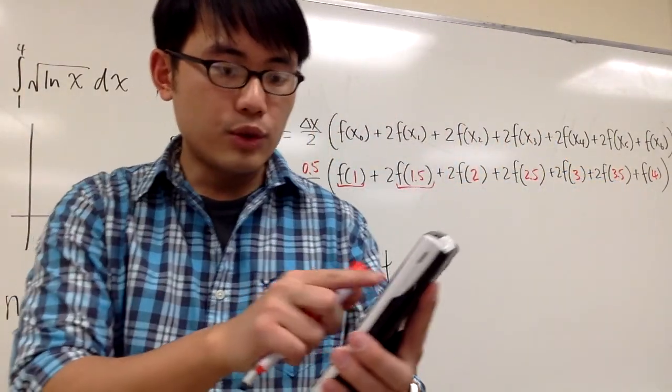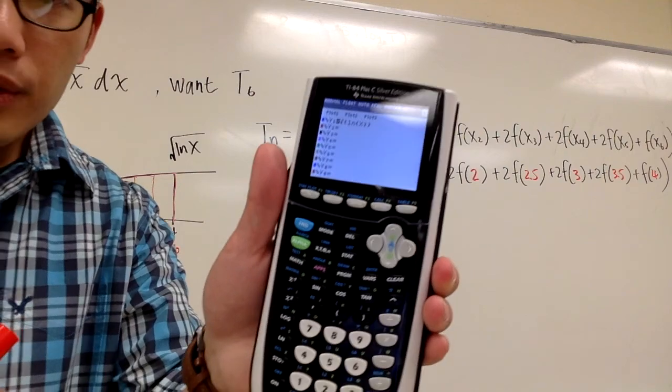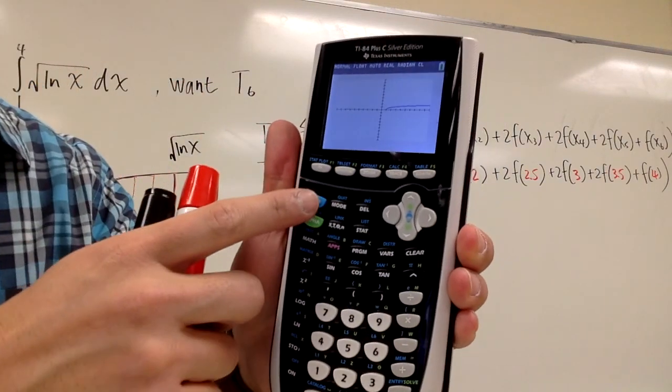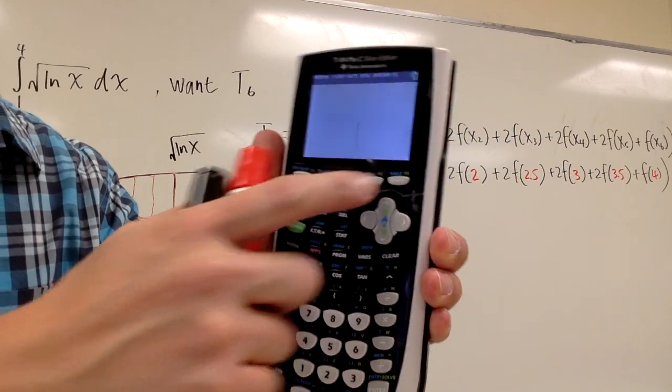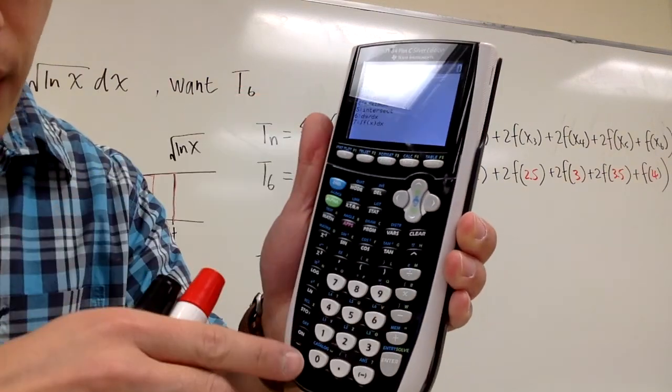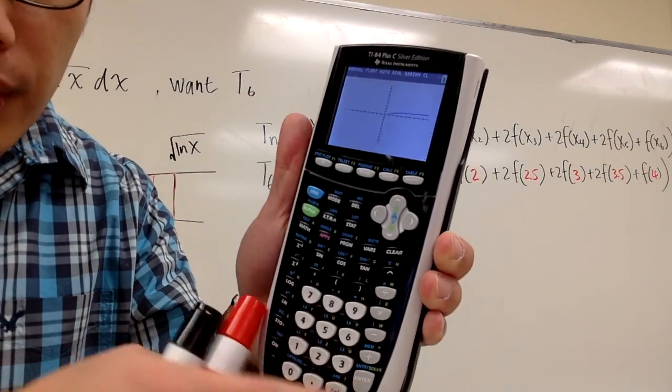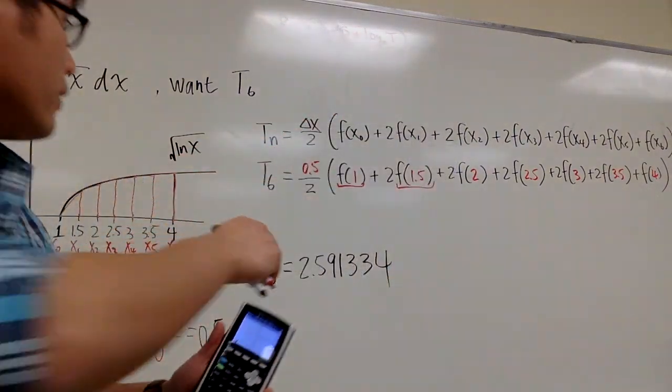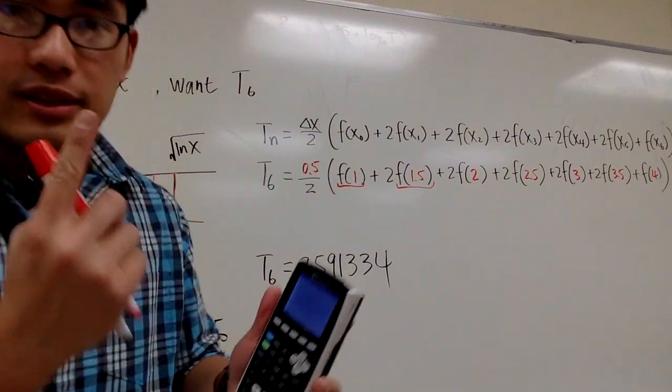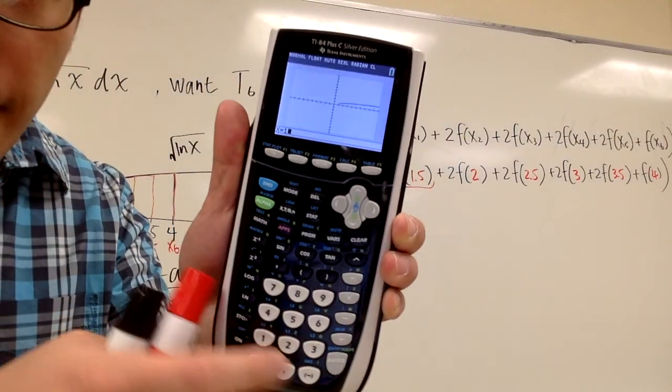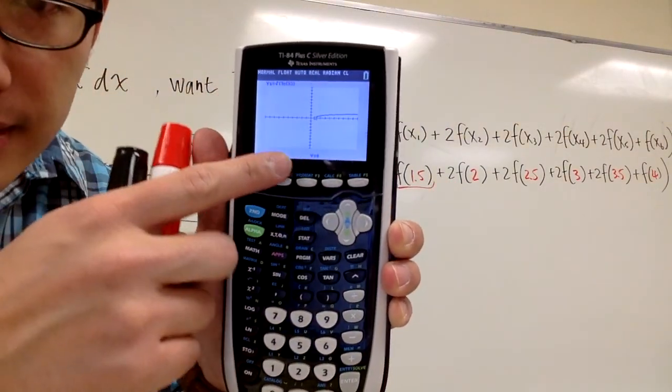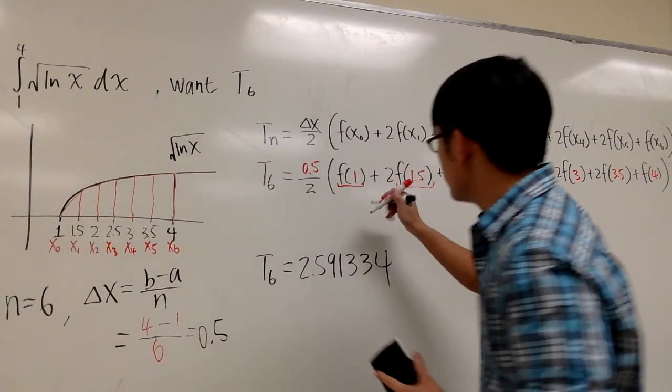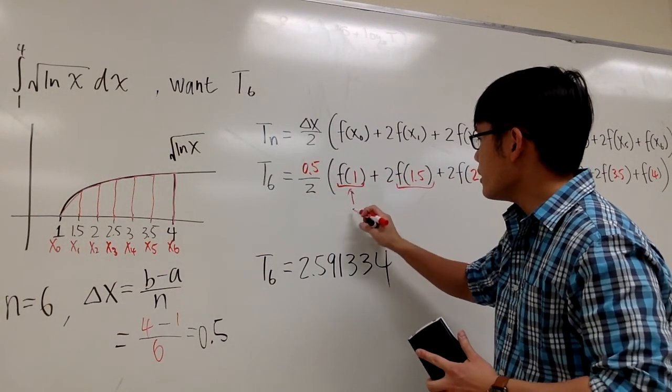So what we need to do is, let's graph the equation, which I entered the equation already, and here is the graph for that. So we can just go to 2nd calc, and I'm going to choose value, which is the first one. Just press enter as well. And it's going to ask us for the x value. For the first one, I have to plug in when x is equal to 1. So I just enter 1. And it's going to give me the y value, which is 0. So I know this right here is equal to 0.